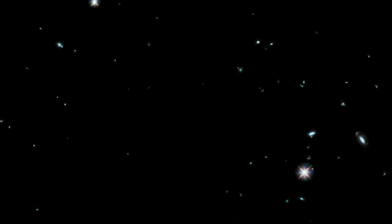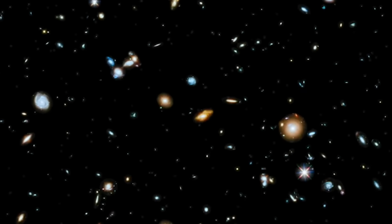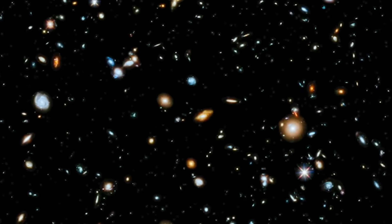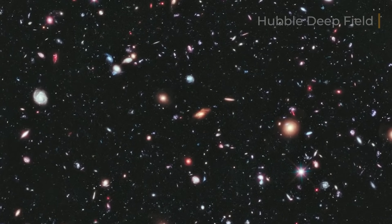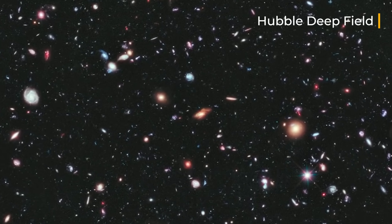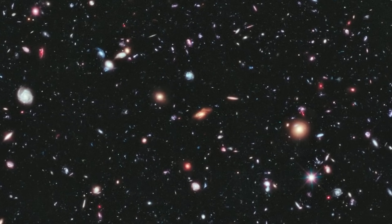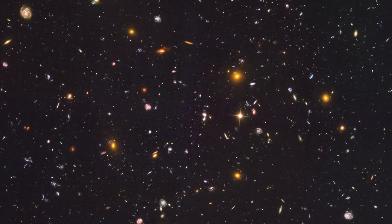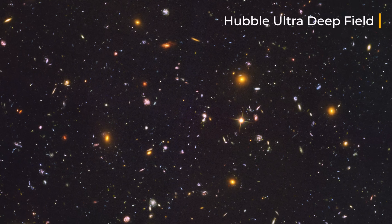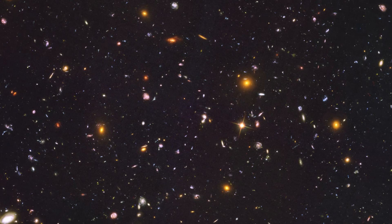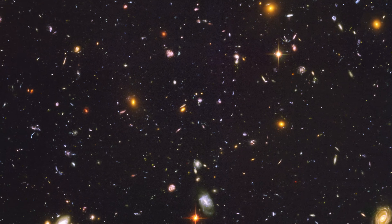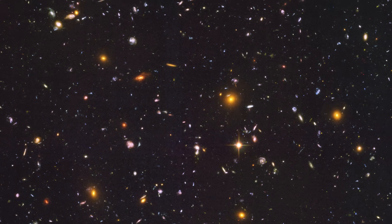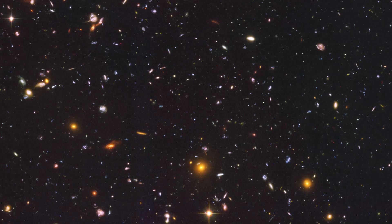To everyone's surprise, it revealed nearly 3,000 galaxies, many from a time when the universe was still very young and galaxies were just beginning to form. This single image proved that the empty parts of the sky were anything but empty. They were filled with ancient galaxies. This was just the beginning. In 2004, Hubble went deeper with the ultra-deep field, capturing the most distant galaxies ever seen at that time. These galaxies likely formed just a few hundred million years after the Big Bang, emerging from what astronomers call the universe's dark ages.